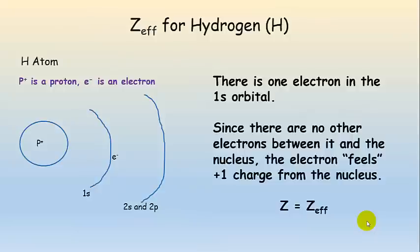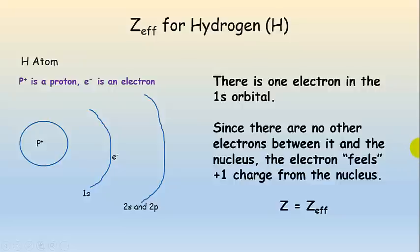Let's look at hydrogen first — really super simple. We have one proton in the nucleus and one electron; in the ground state that electron is in the 1s. There are no other electrons between it and the nucleus, so here's the electron and there's the proton — nothing's in the way. That electron is feeling the full nuclear charge. In this case, the atomic number Z equals Z effective.